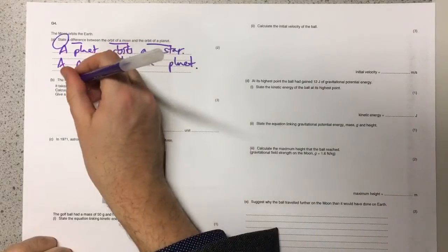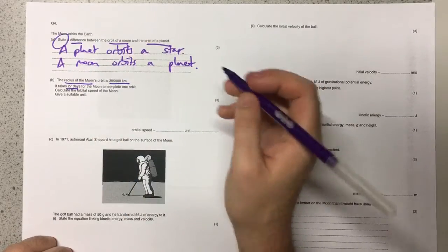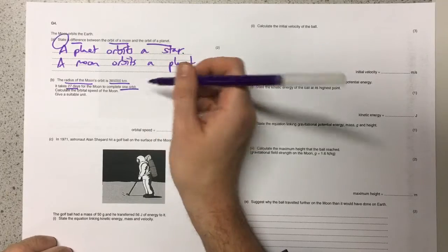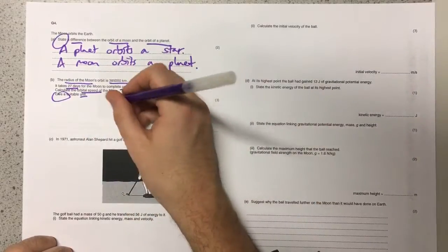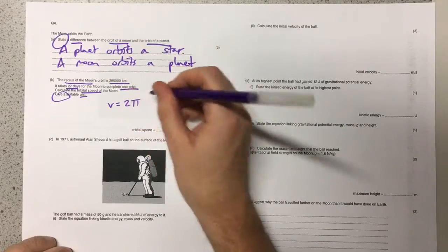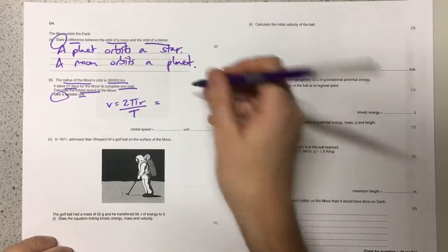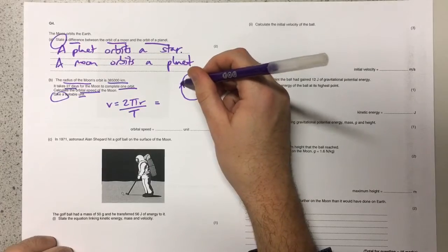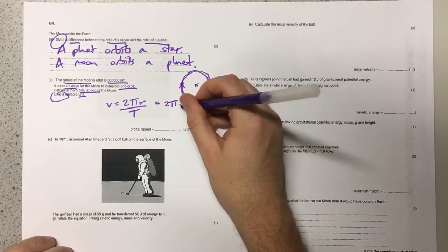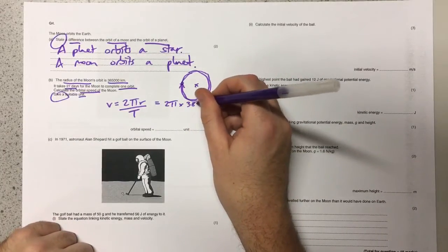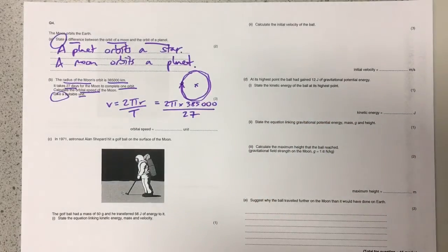The next part of the question tells us the radius of the moon's orbit is 385,000 kilometers and it takes 27 days for the moon to complete one orbit. Then it asks you to calculate the orbital speed and give a suitable unit. The equation for orbital speed is v equals 2πr over t. You'll recognize that 2πr is the circumference of a circle, so that's just the distance that an object travels as it's orbiting around the body. We're going to do 2π and then multiply it by the orbital radius, 385,000, and then divide that by 27.